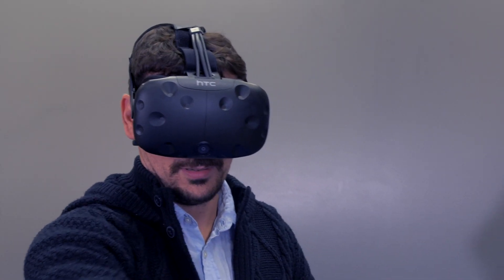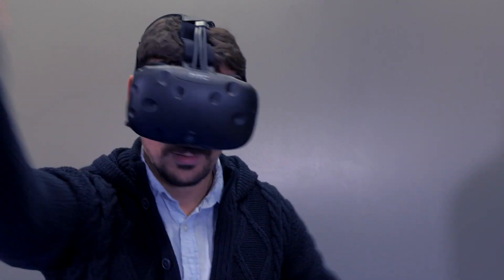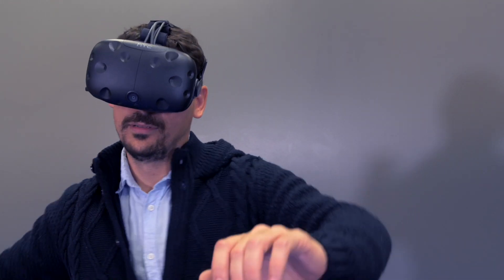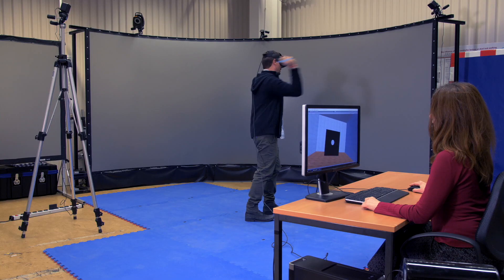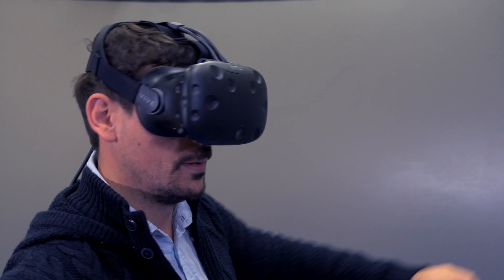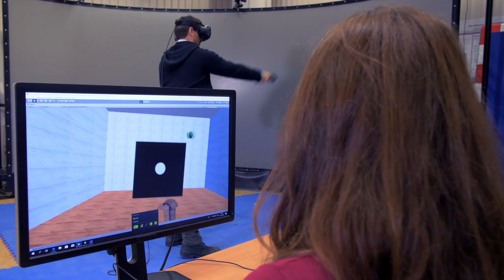We investigate humans to understand principles of sensorimotor interaction that can inspire design of better robots. For example, we find that predictability of throwing action depends on individual throwing strategy. We use virtual reality to create novel experimental conditions that help uncover principles of interaction.